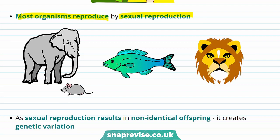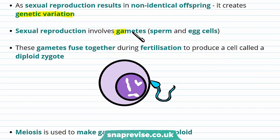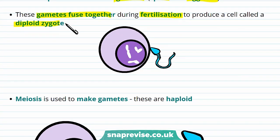Sexual reproduction produces non-identical offspring, so it creates genetic variation as each offspring will have different genes. This means that they are all unique. Sexual reproduction also involves gametes, and gametes are sperm and egg cells in humans. These gametes fuse together during fertilisation and produce a diploid zygote cell.